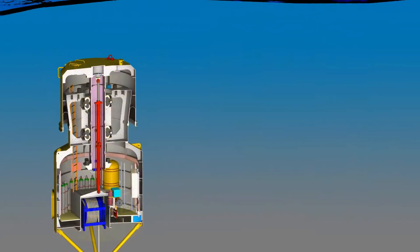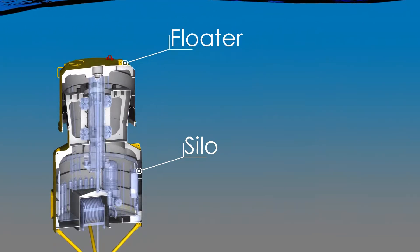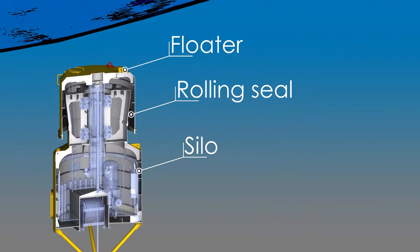The device consists of a pair of structural components, the floater and the silo, which together with a rolling seal enclose a volume of air.